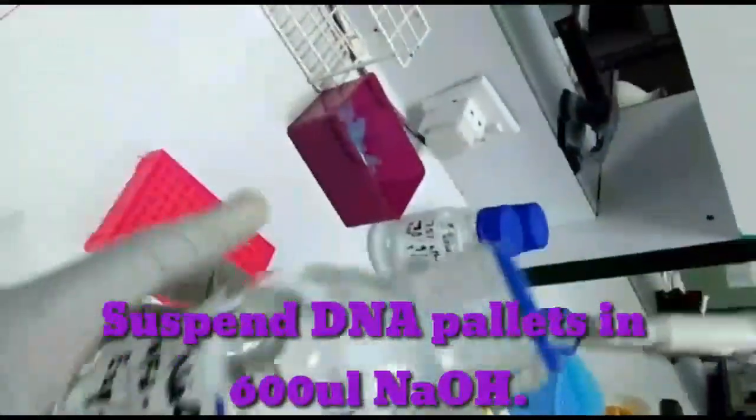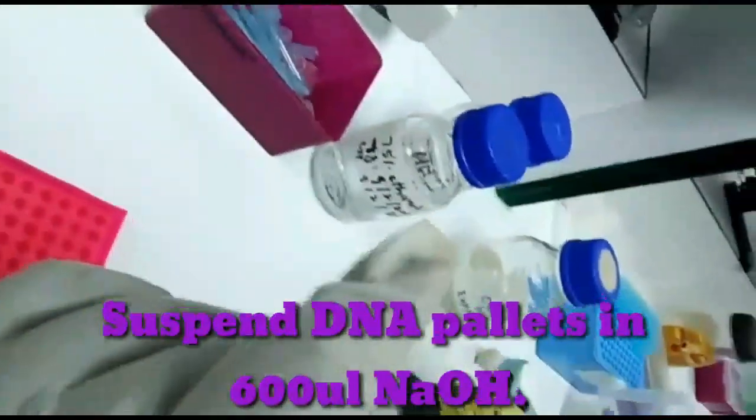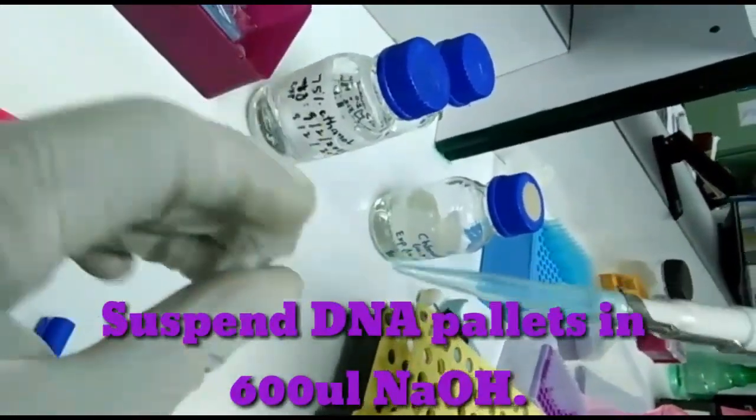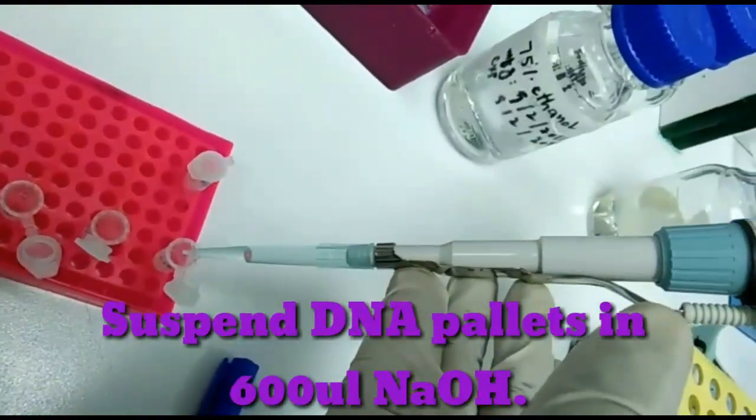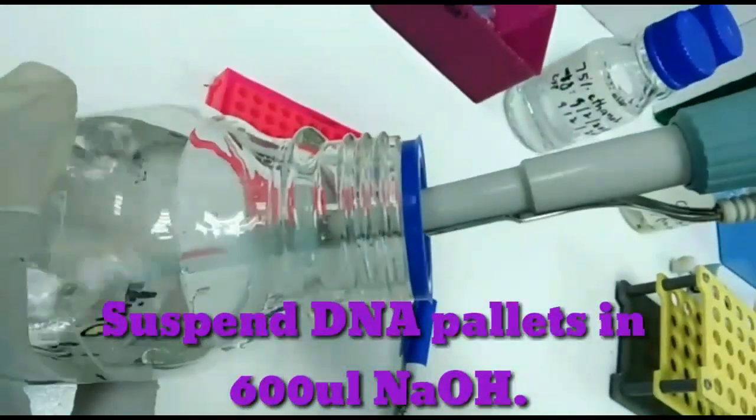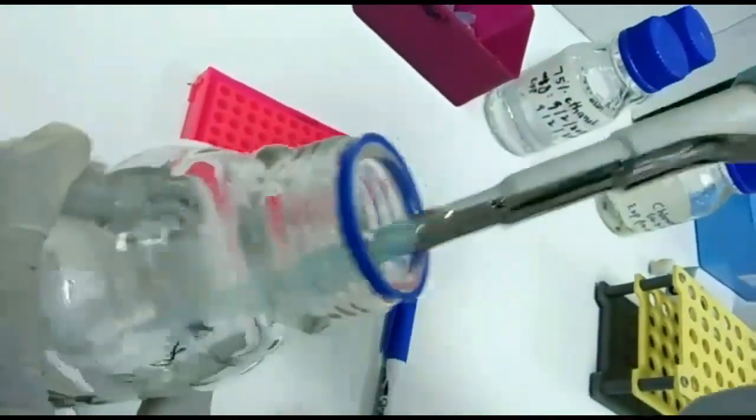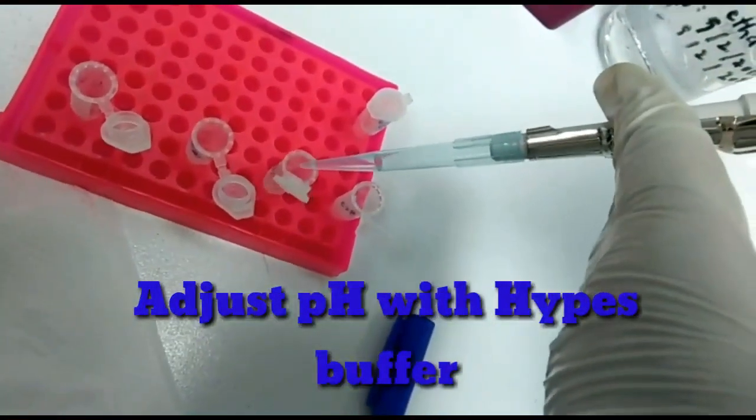After that, suspend the DNA pellets in NaOH 600 microliters. The pH must be adjusted up to 8 by adding HCl solution.